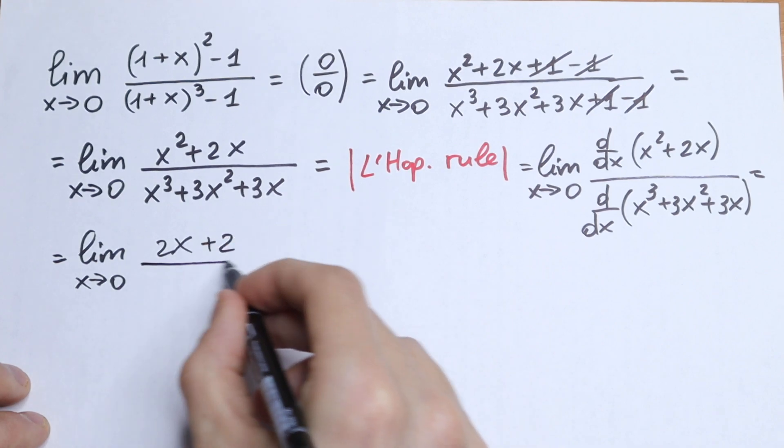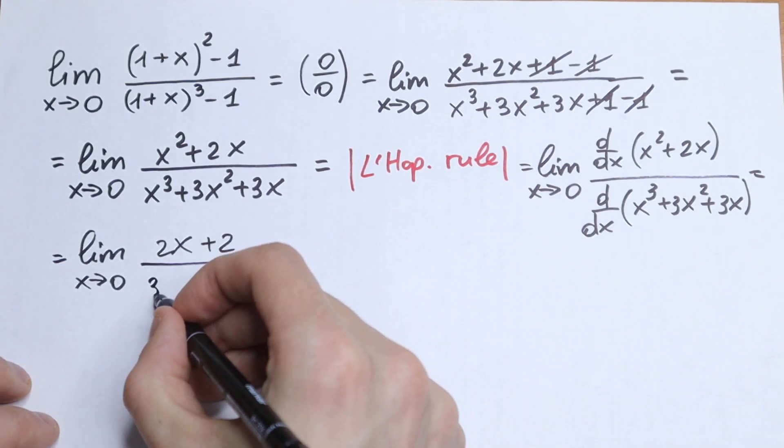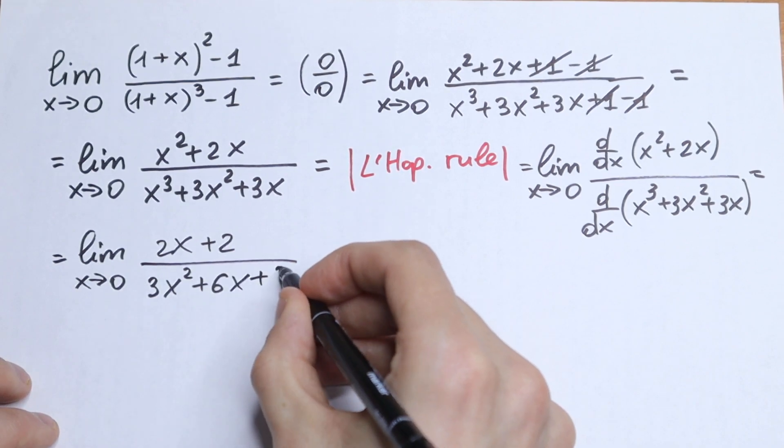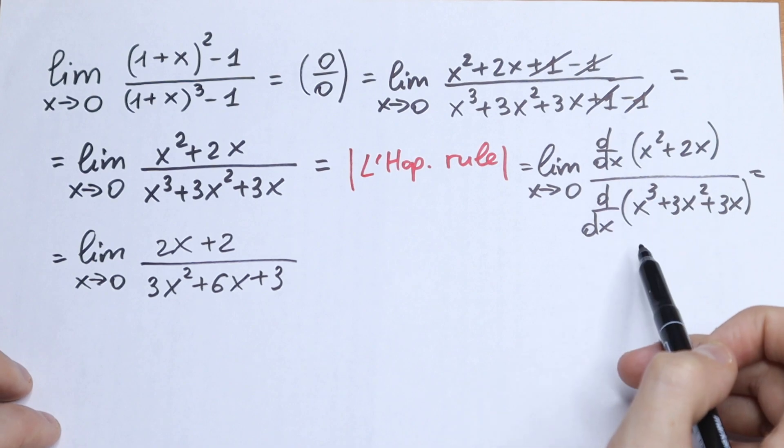2x + 2 will be our derivative of our numerator, and 3x² + 6x + 3, this will be the derivative of our denominator.